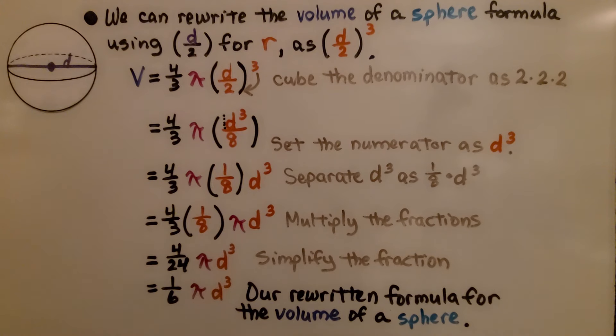So our rewritten formula is this for the volume of a sphere: 1 sixth pi d cubed. So if we have the diameter, we could use this as our formula to find the volume of the sphere.